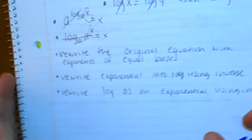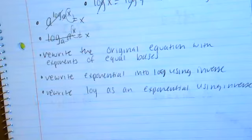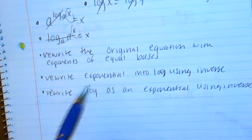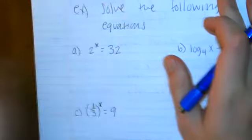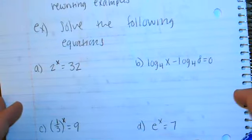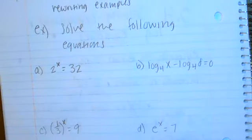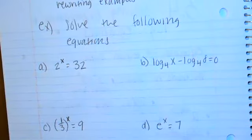The three styles we're going to use to solve these are: rewriting the original equation with exponents of equal bases, rewriting an exponential into a log function, or a log into an exponential. I'm going to give you a ton of different examples and then there will be homework over these. These can take a really long time to get the hang of, but once you start figuring out ways to rewrite them to solve, it gets easier.